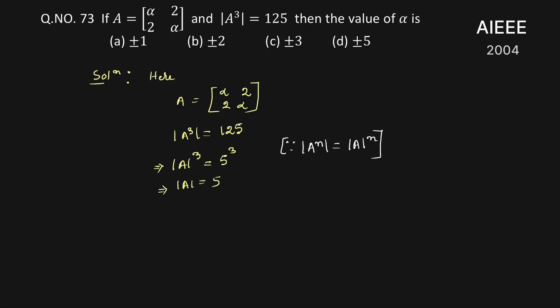Therefore A we are able to write this which is determinant of alpha 2, 2 alpha which is equal to 5. Now we solve this determinant with the help of first row.